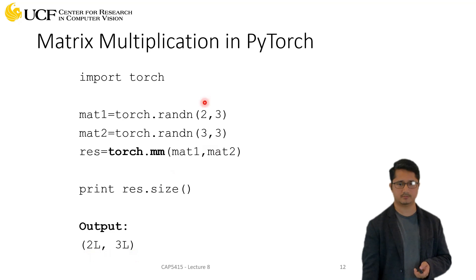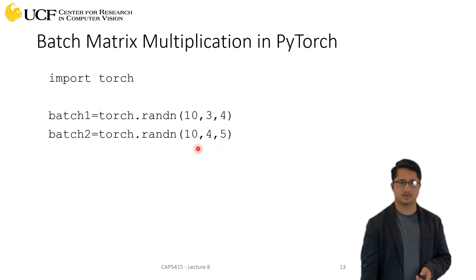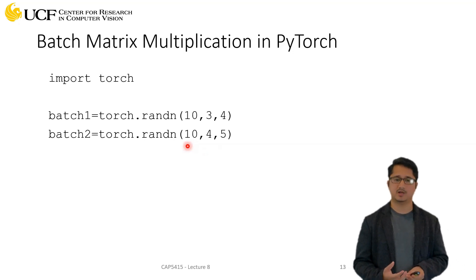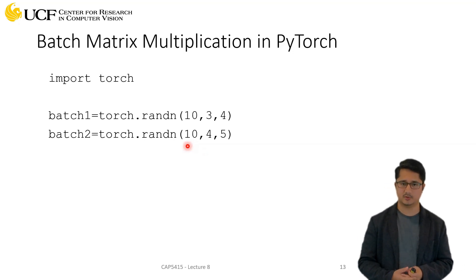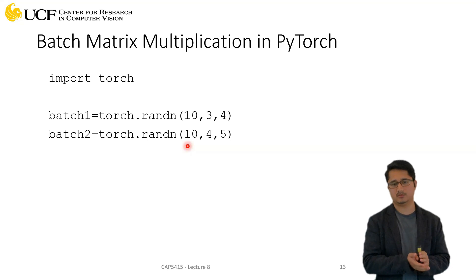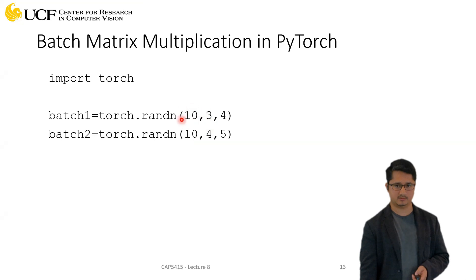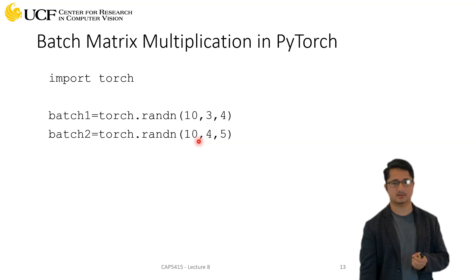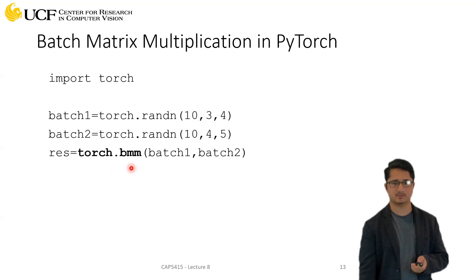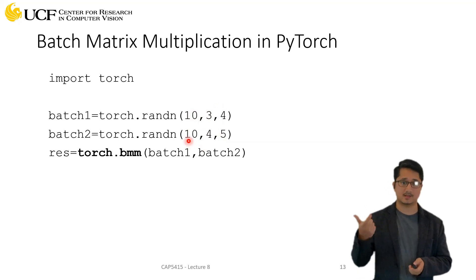We don't multiply matrices independently because we train on batches — a mini-batch of 16 or 32 samples. PyTorch allows you to perform matrix multiplication in batches. In this case we have a batch of 10, so we have 10 different matrices each of shape 3×4, and the second matrix has shape 4×5. You can use the simple bmm function to multiply these in batches.